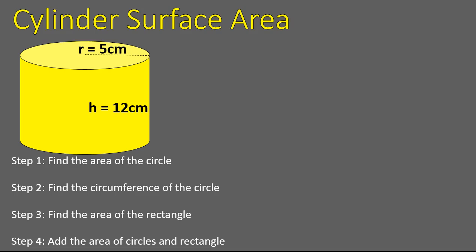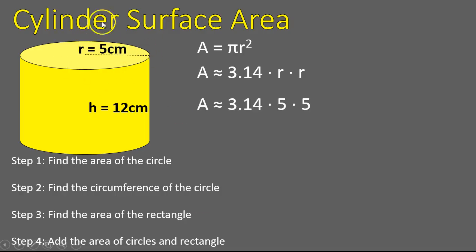Step one: finding the area of the circle. The area of a circle is pi times radius squared — approximately 3.14 times radius times radius. The radius of this circle on top is 5. So we multiply that out, and that gives us the area of the circle on top, which is the same as the area of the circle on the bottom. Step one is done.